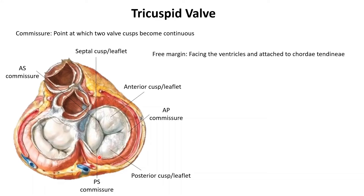The free margins of these cusps face the ventricles and they're attached to chordae tendineae — I'll explain what those are in a minute. The attached margins are joined to the fibrous ring. You can see this ring right here — this is the fibrous ring that surrounds the entire tricuspid valve. There's also a fibrous ring surrounding the bicuspid valve.